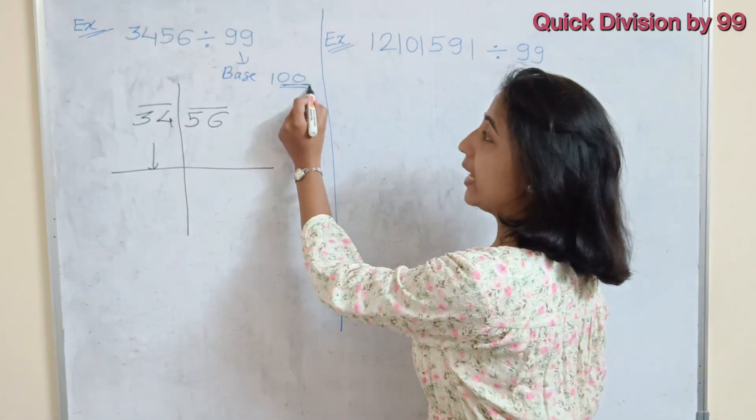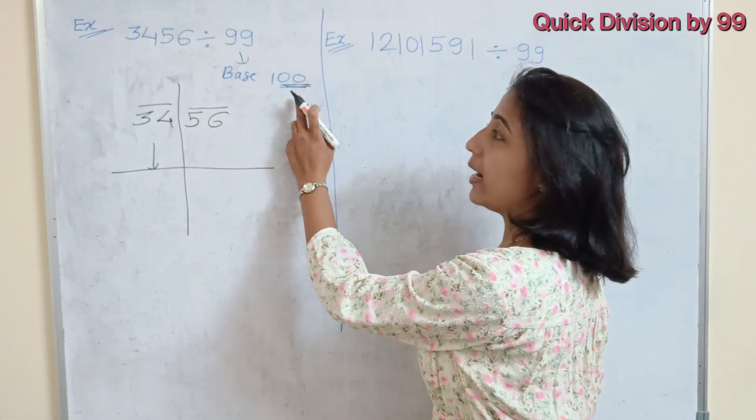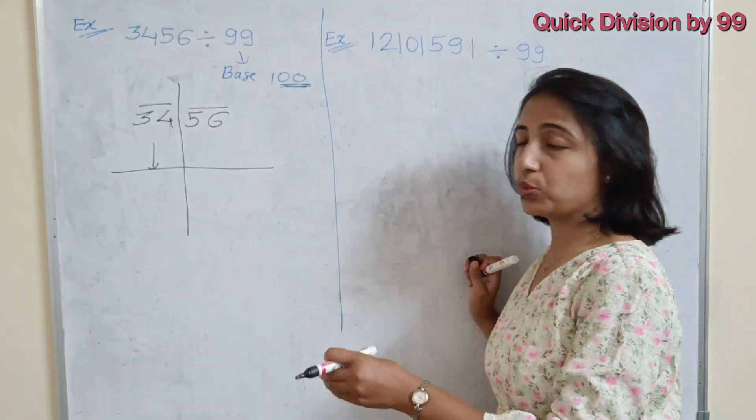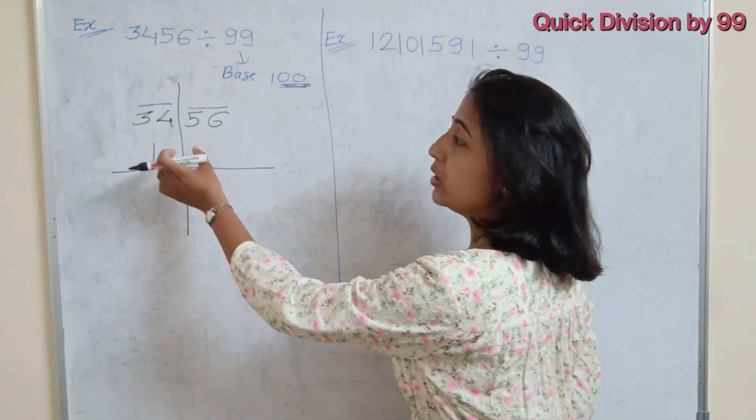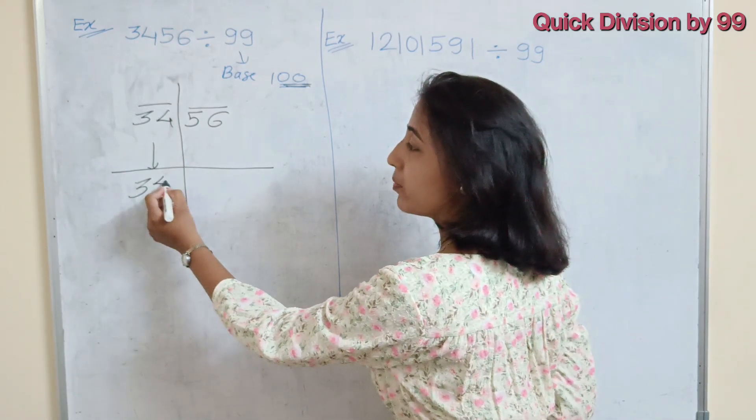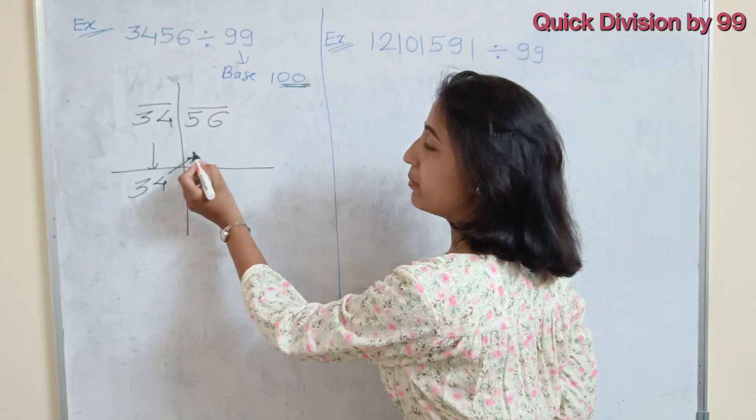But here, 99 is near to 100, 100 contain 2 zeros. So we have to take the pair of 2, 2. So solve with the pair of 2, 2. So first number, that means first pair, will be as is. So we have 34 and 34 add in the next number.